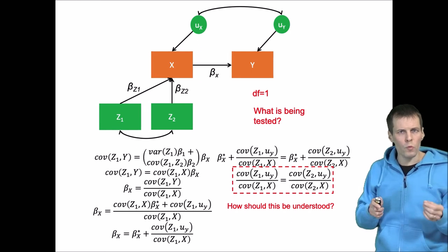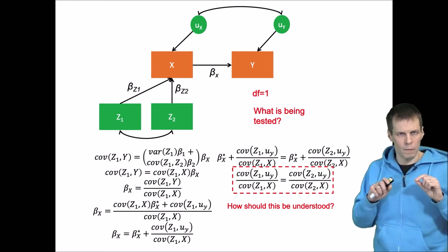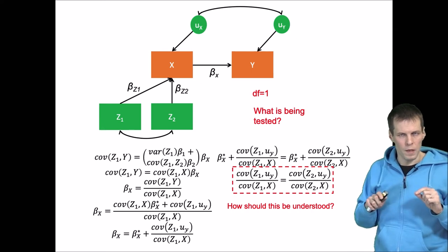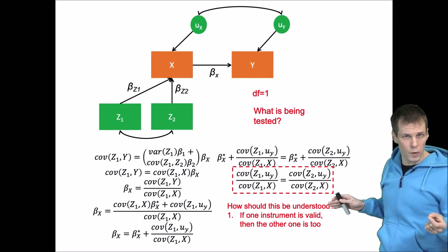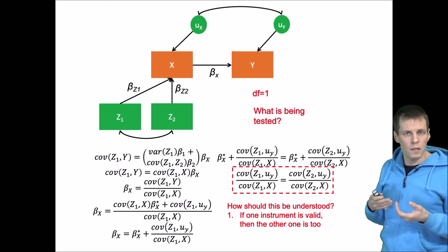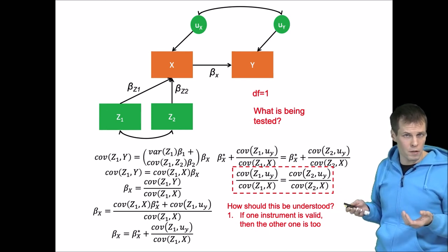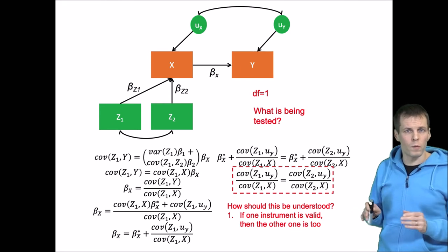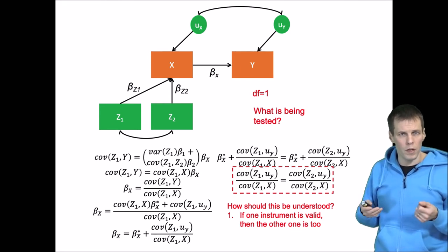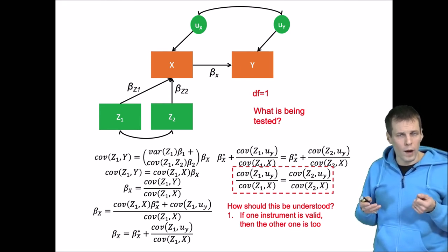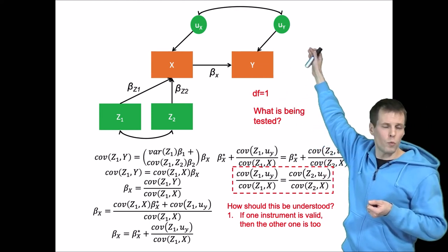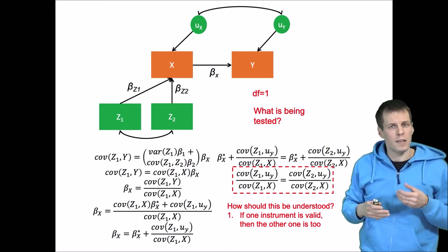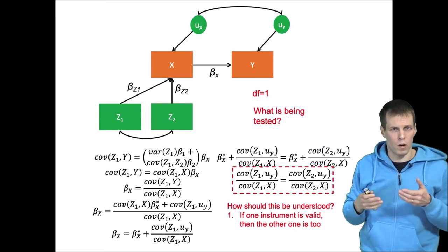There are two ways of understanding the equality of these two ratios. The first one is that if one instrument is valid, the other one is as well. And this is the assumption of these exclusion tests or over-identification tests. We must assume, we need to have a strong theoretical reason to believe that at least one of our instruments is perfectly uncorrelated with u, y in the population.